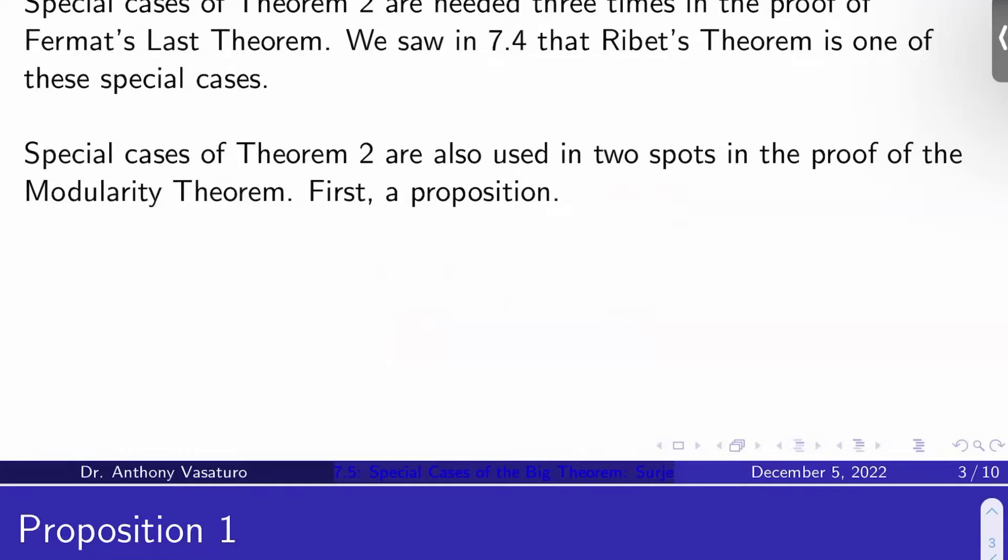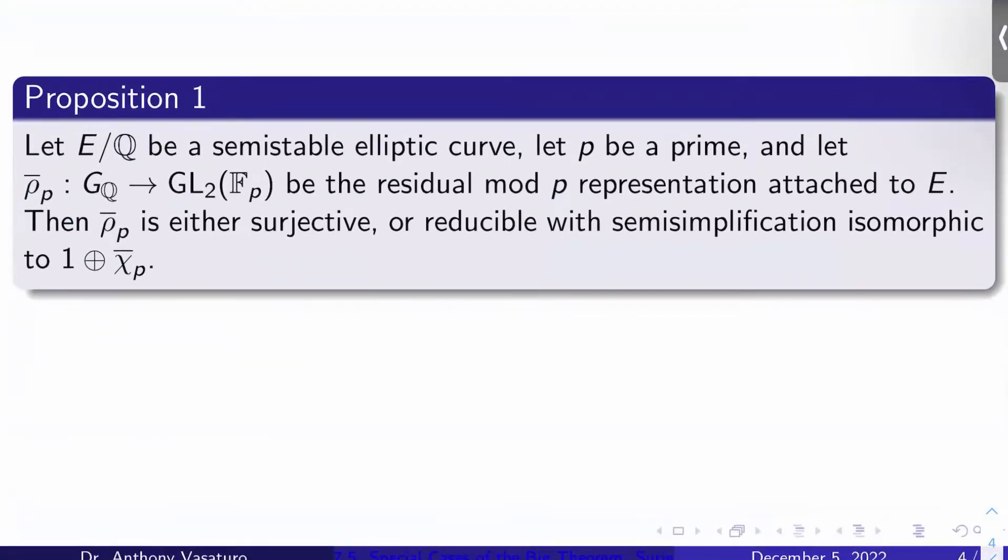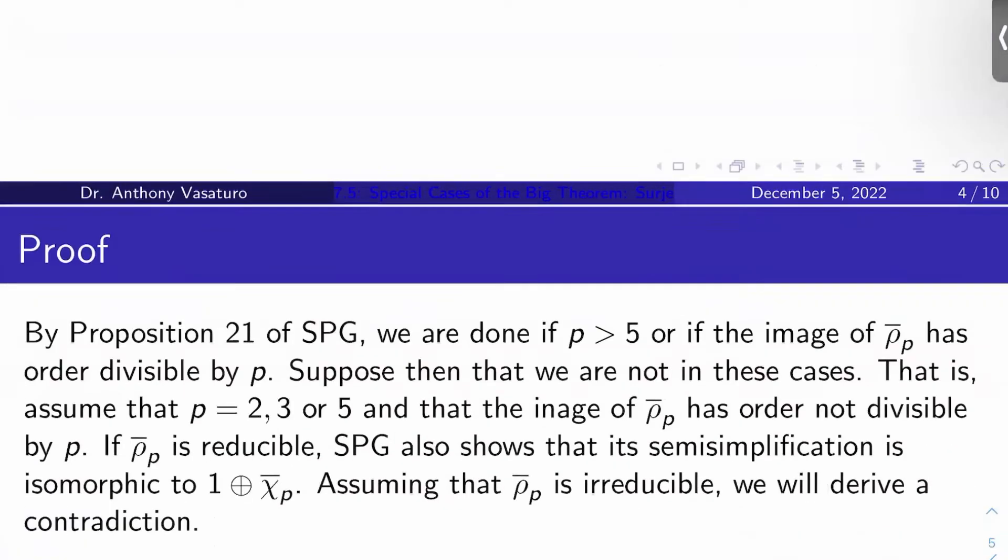But before we do that, we're actually going to need a crucial proposition, which again, like I said, is used in the proof that semi-stable modularity holds, given that r equals t. So Proposition 1: Let E over Q be a semi-stable elliptic curve. Let P be prime, and let rho P bar from GQ to GL2 of Fp be the mod P representation attached to E. So this is the action on the P torsion of E by Galois.